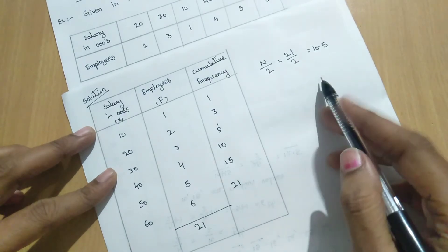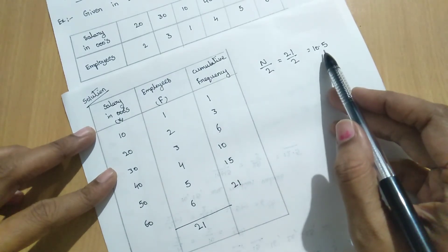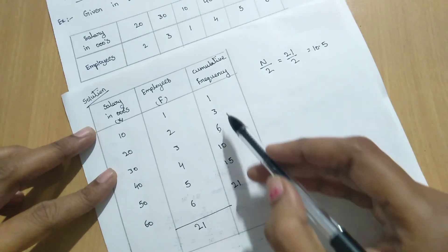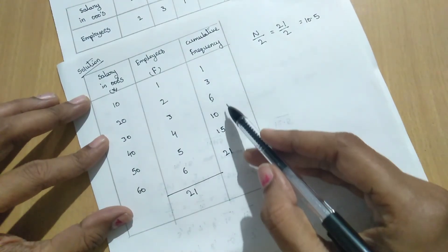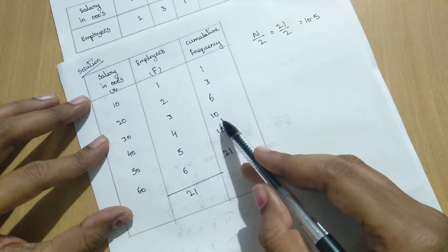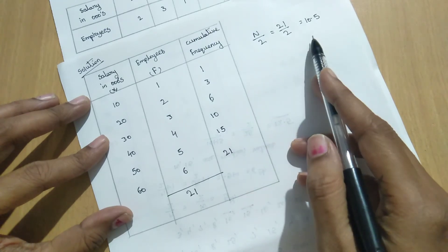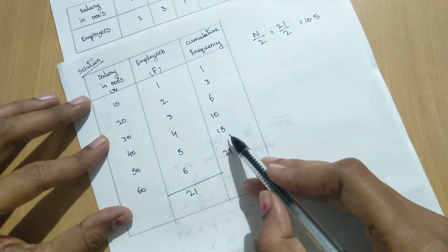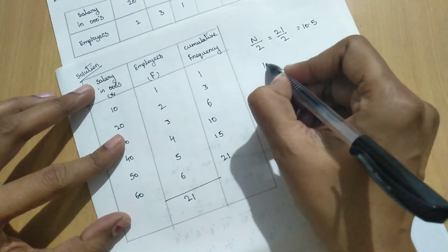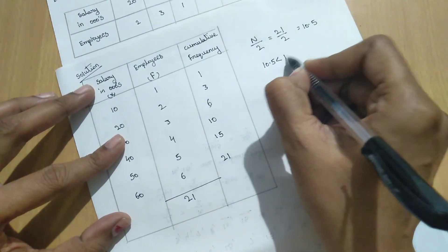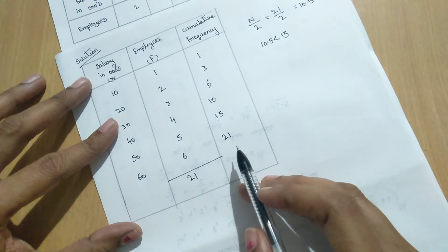So here we have to see the greatest value near to the 10.5. So here in this cumulative frequency. So that is what is the greatest value near to 10.5 equal to 15. That means 10.5 less than 15. So then what is the median value.